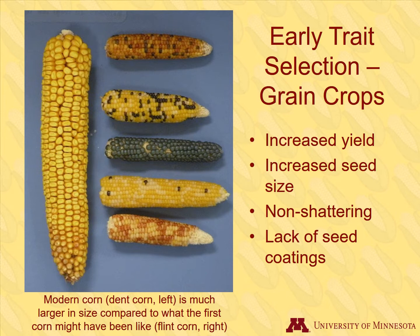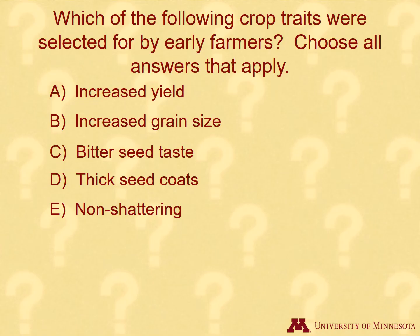Early farmers also saved seed from those plants that didn't have shattering issues. Shattering is when the seed falls from the plant when it is ripe. Selecting for non-shattering meant that more seed could be harvested. Another trait related to harvest is lack of seed coatings — some grains have seed coatings that make grinding or processing the seed more difficult.